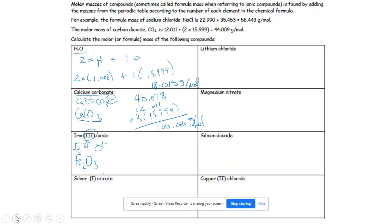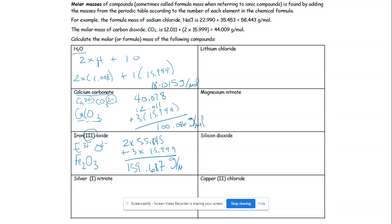Now I need two irons and three oxygens. Iron is 55.845 and oxygen is 15.999. So: two times 55.845 plus three times 15.999. Multiply and add, and you get 159.687 grams per mole.